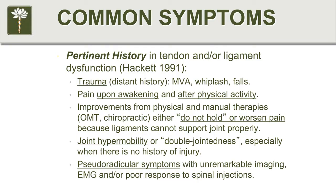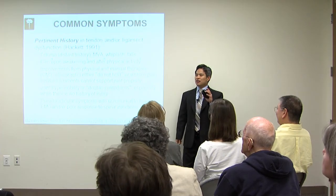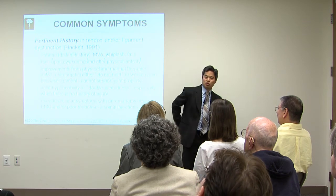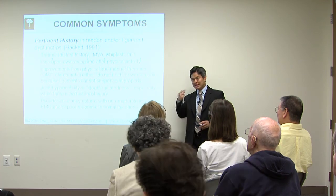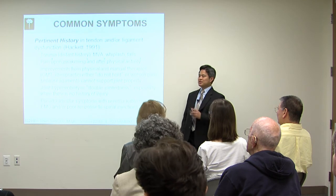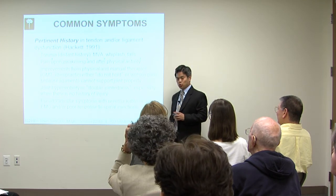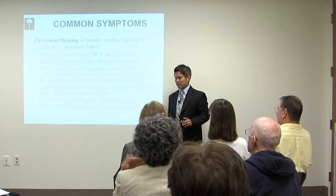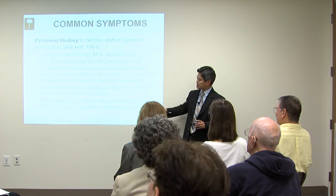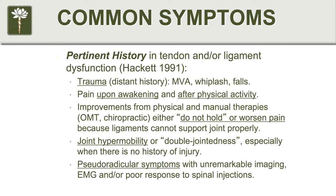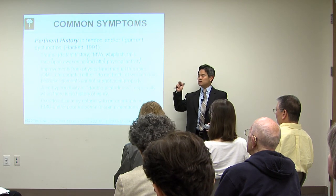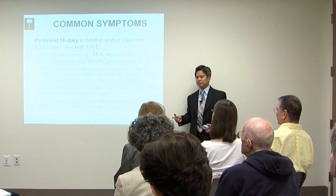Then there's pseudo-radicular symptoms. You can have referred pain — neck pain that goes down the arm, low back pain that goes down the leg. The knee-jerk reaction from doctors is to say that's a nerve problem, a pinched nerve in your neck or back. But what's interesting is that probably the majority of referred pain going down the arm or leg is not coming from a nerve — it's coming from other structures such as joints, ligaments, and tendons. Radiculopathy by definition means pain from a pinched nerve. Pseudo-radicular means fake radiculopathy — referred pain that mimics a pinched nerve but is not coming from a nerve; it's coming from something else.